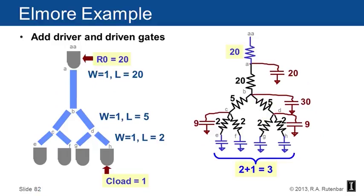We still have to add a driver and a driven gate. Let's say there's a driver that adds a new node at the top of the tree, AA, with a resistance of 20, and that there's a load representing each driven gate at nodes E, F, G, and H with a load one. I'm going to get the same tree from A, B, C, D, E, F, G, H, only now there's going to be a resistor going from this new node AA at the top to node A of size 20. Each load is going to add one more to the capacitors at nodes E, F, G, and H at the bottom of the tree. So those capacitors go from being size 2 to size 3.